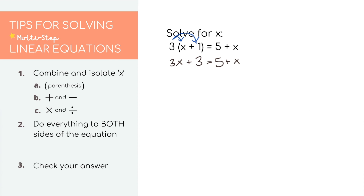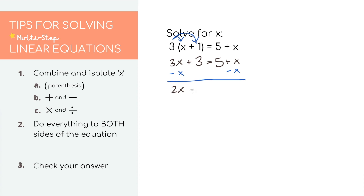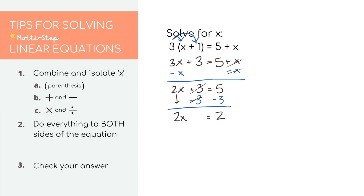This looks like one of the addition problems we did earlier. We still want to get all of our x's on one side and all of our numbers on the other. Since 3x is larger than x, I'll subtract x from both sides. We get 3x minus x, which is 2x plus 3 equals 5. To get rid of the plus 3, subtract 3 from both sides, leaving 2x equals 2. Dividing by 2, we get x equals 1.